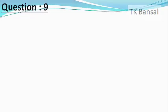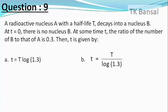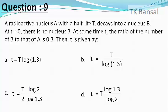Our next question is: A radioactive nucleus A with half-life T decays into a nucleus B. At t = 0, there is no nucleus B. At some time t, the ratio of the number of nuclei B to that of nuclei A is 0.3. Then t is given by which expression? The options are: t = T log(1.3); t = T/log(1.3); t = (T/2) × log 2/log(1.3); and t = T × log(1.3)/log 2.